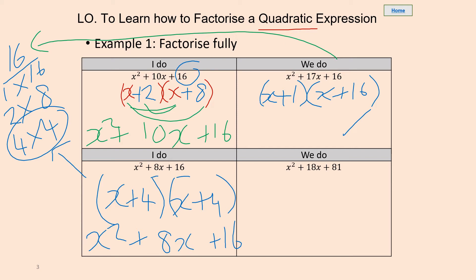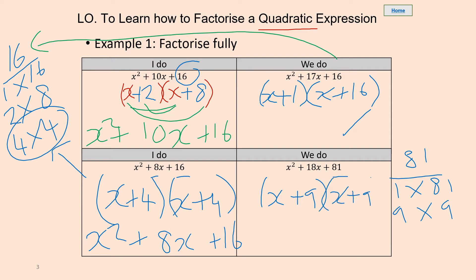Let's have a look at this one. We want the product of 81. What two numbers would then give us 18? Pause the video while you have a go. The product of 81: we've got 1 and 81 — that's not going to give us 18 — and 9 times 9. If we add 9 and 9 together we'd get 18. So you should have x plus 9 and x plus 9, which gives us 18x. We could also write that as (x + 9) squared.